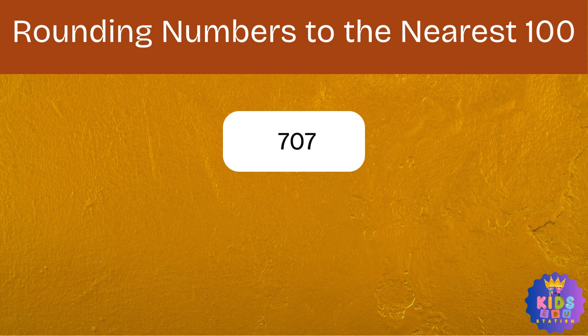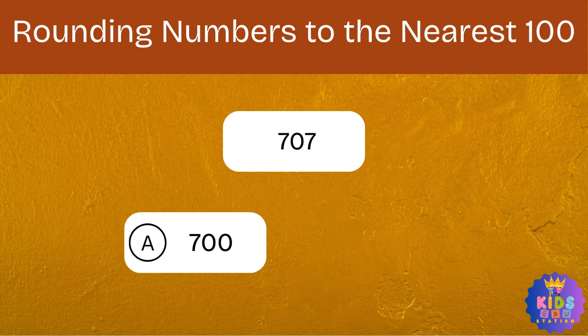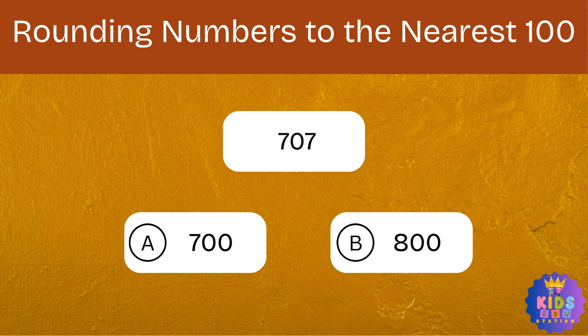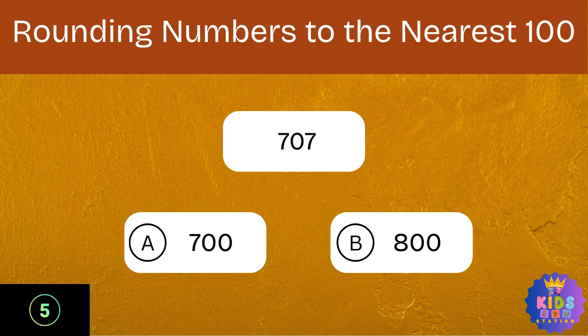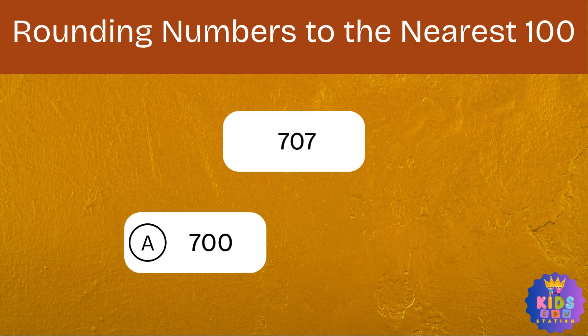Round 708 to the nearest hundred. Option A: 700. Option B: 800. And the correct answer is 700.